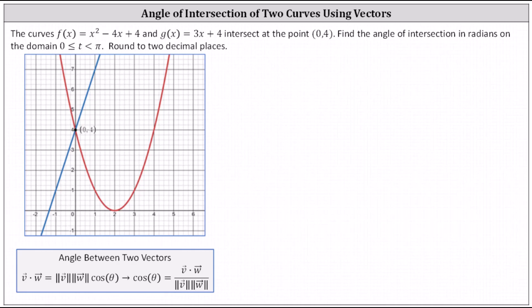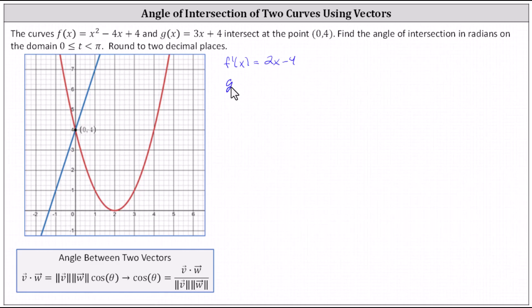Let's begin by determining the derivatives. f prime of x is equal to the derivative of x squared minus four x plus four, which is two x minus four, and g prime of x equals the derivative of three x plus four, which is three.